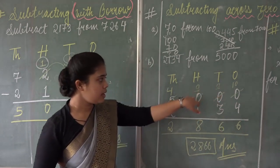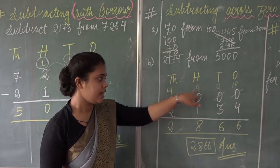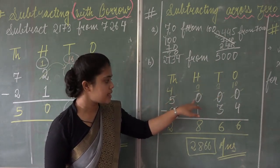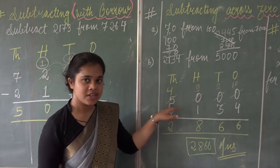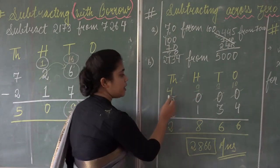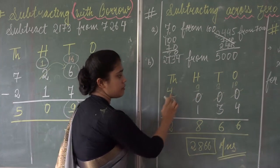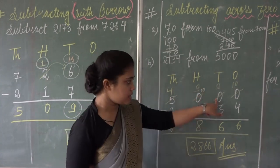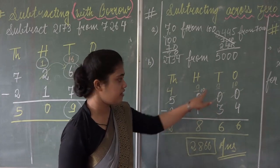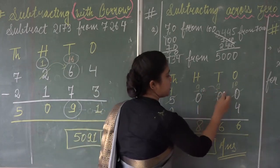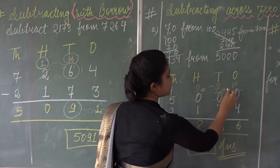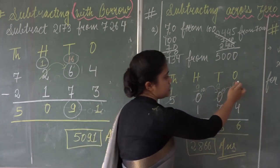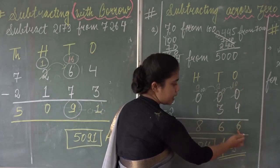So it goes to the number at the thousands place, which is 5. The 5 gives 1 to it, making that position 10. Then this 10 gives 1 to the next 0, making it 10 as well. And when that gave 1 away, the first 0 also becomes 10. So 10 minus 4 is 6.